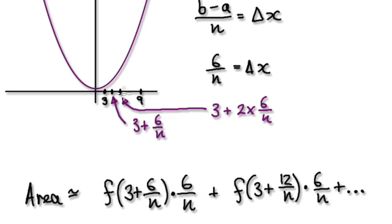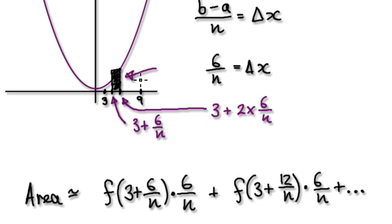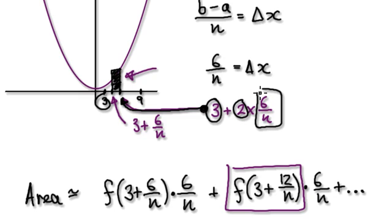And then we would move on to the next triangle, which would be this one here. The height of this triangle here is given by this, because the x-coordinate right here is given by 3 plus 2 lots of delta x.